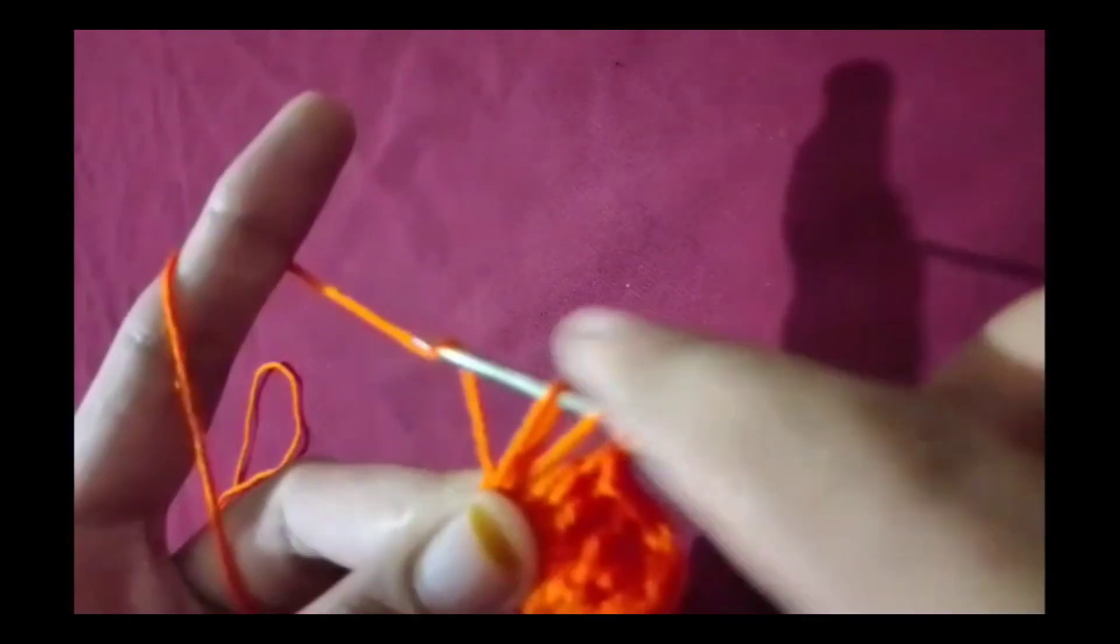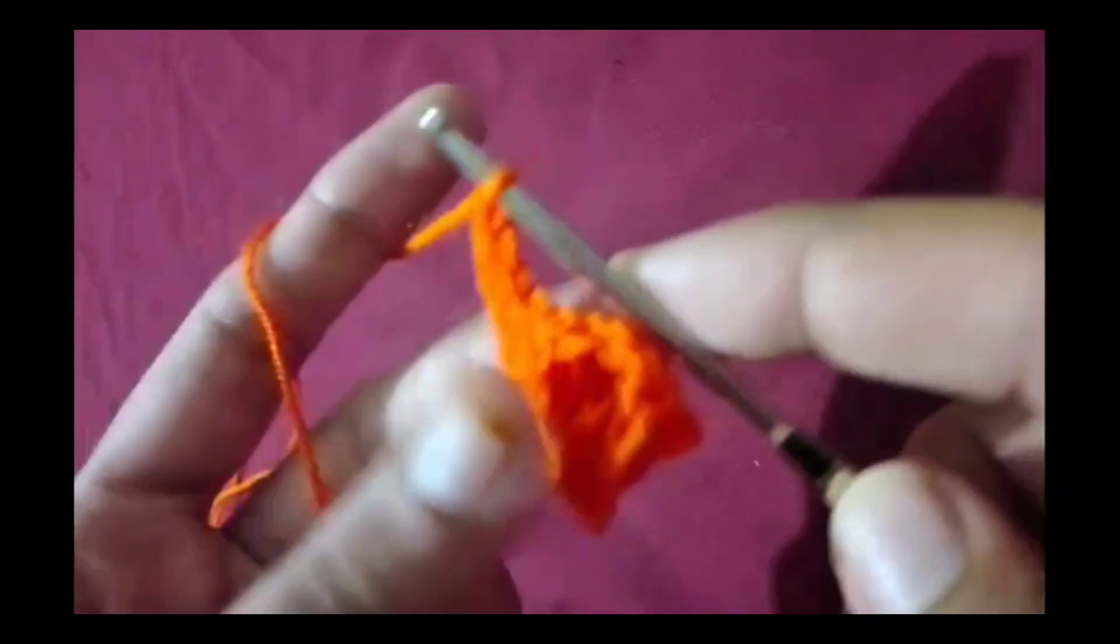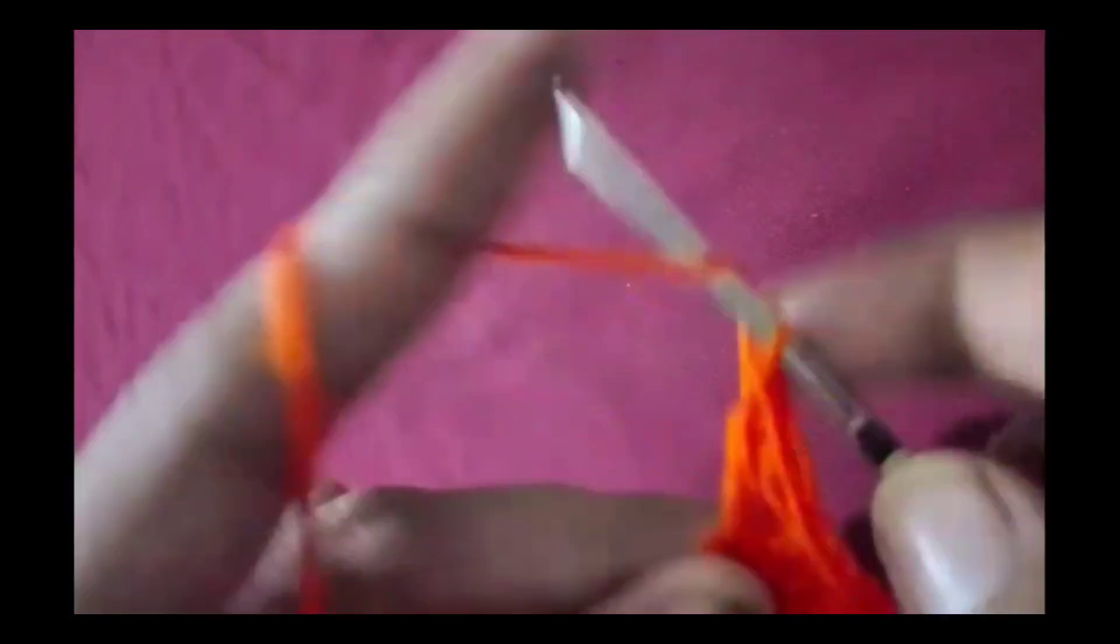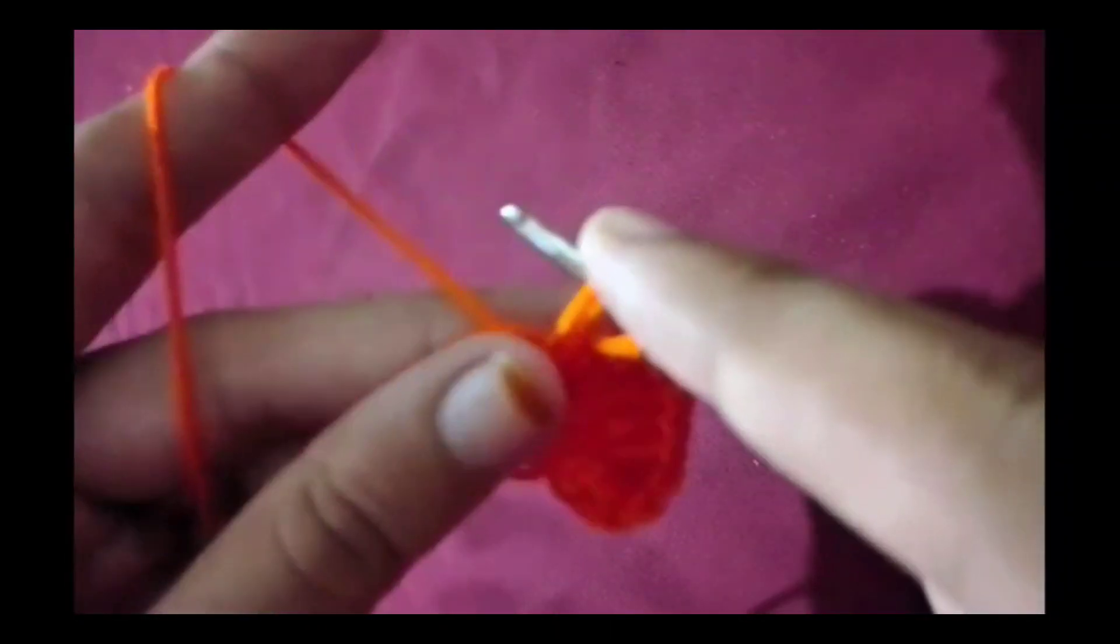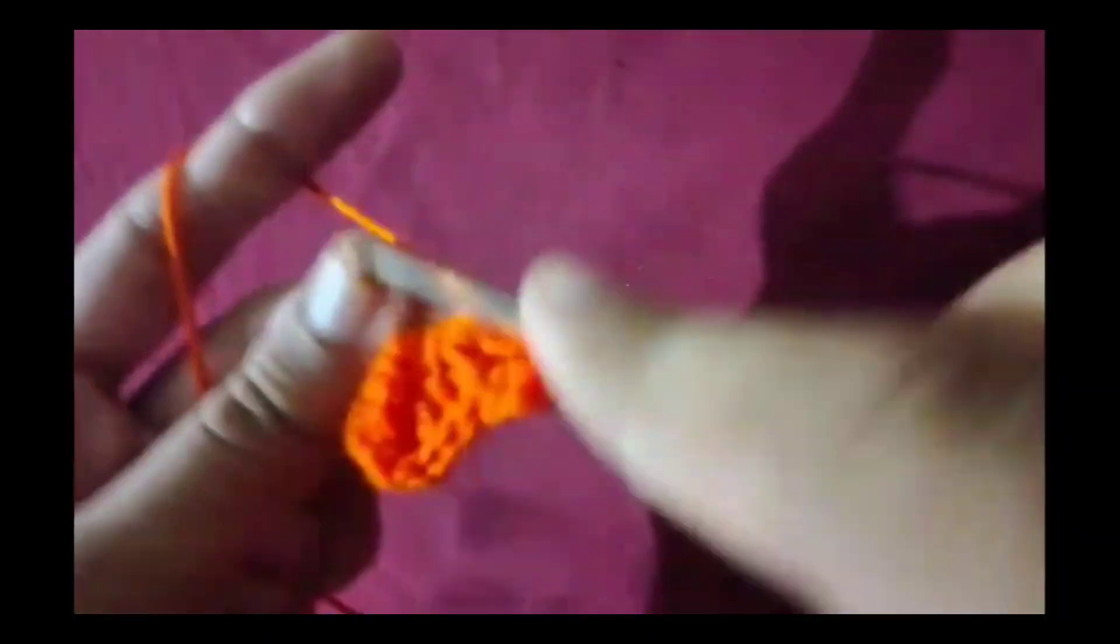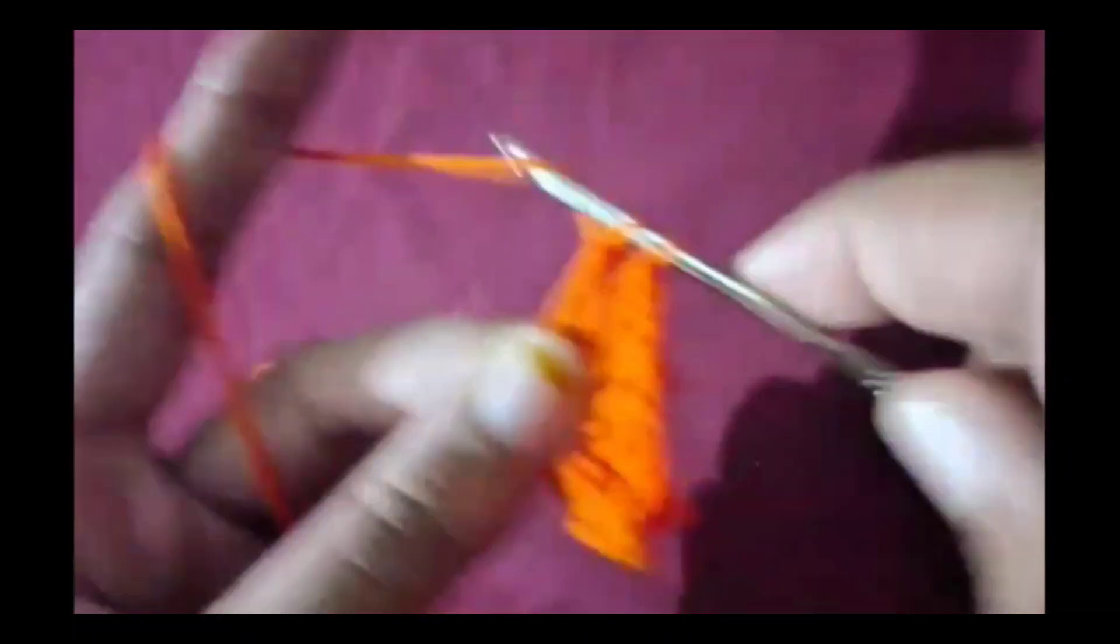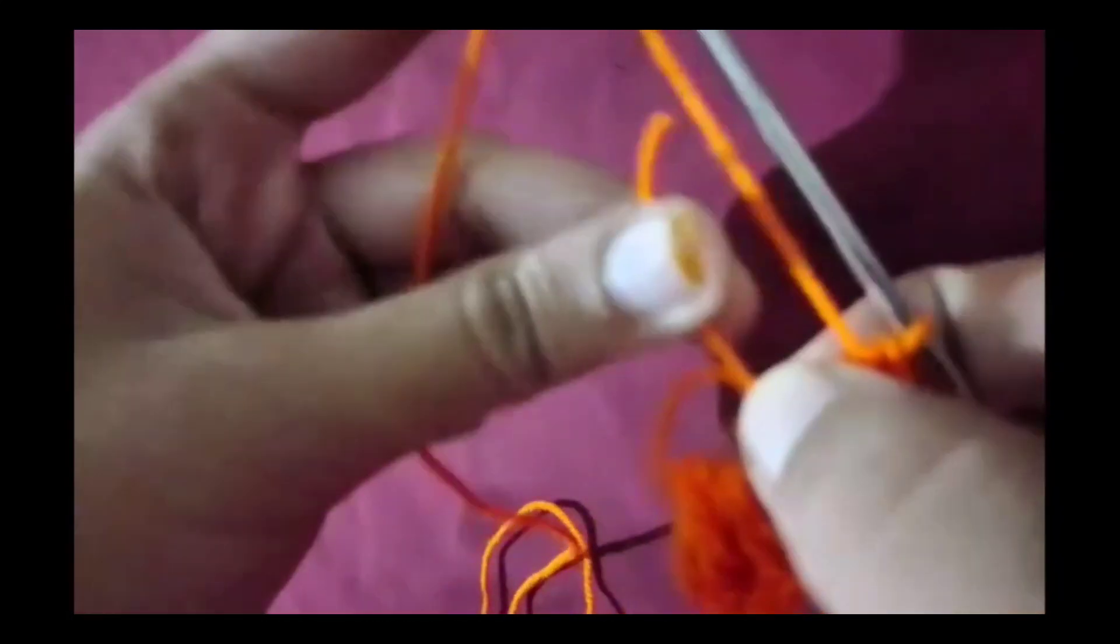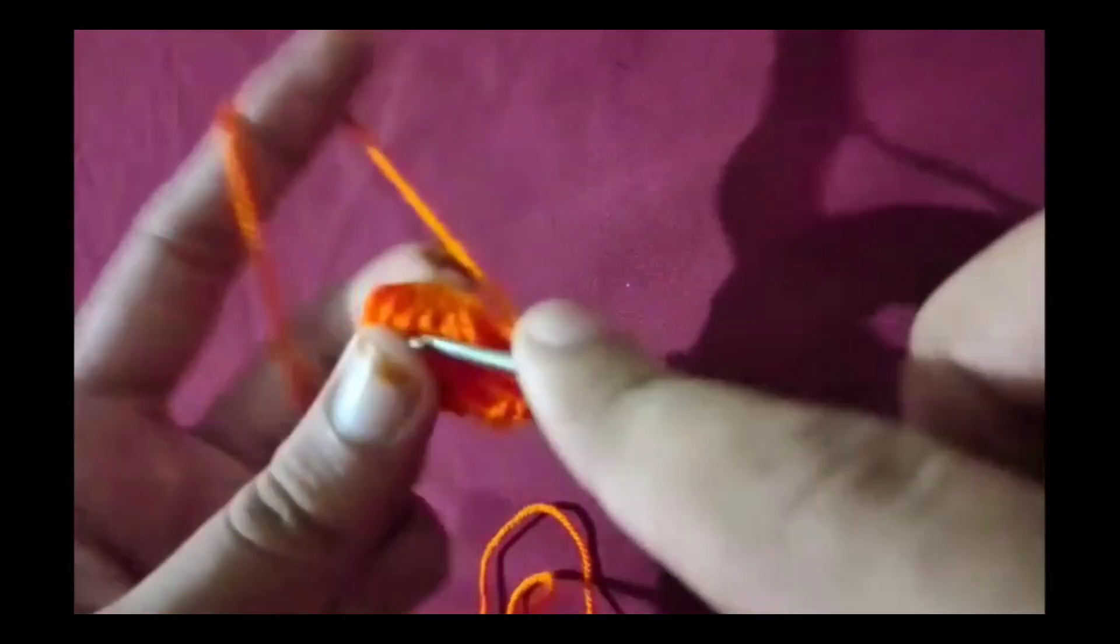Next we'll crochet into the loop. First round: chain 3 to start the first round. Now double crochet three times into the loop. These stitches will form the first half of the heart. Chain 1 in the middle to shape the point.